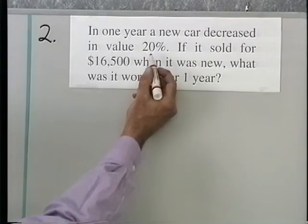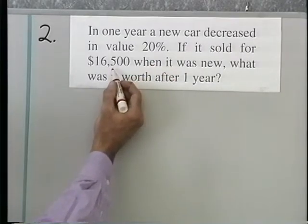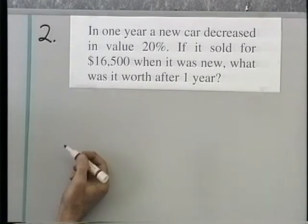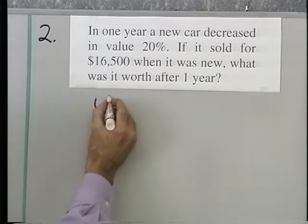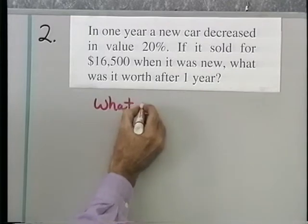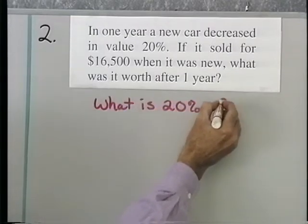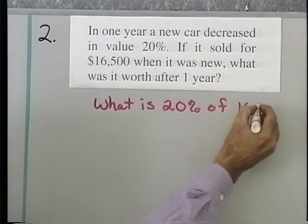So what I want to know first of all is what is 20% of $16,500? And that will tell me the amount, the dollar amount of the decrease in value of this. So what number is 20% of $16,500?